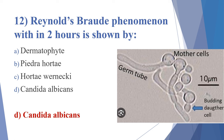The procedure is: the sample is suspended in animal serum and incubated, then examined microscopically for the detection of germ tube.